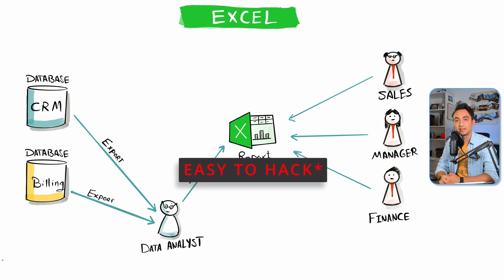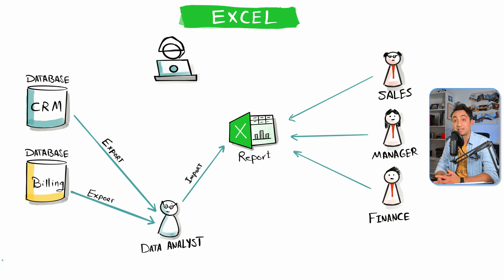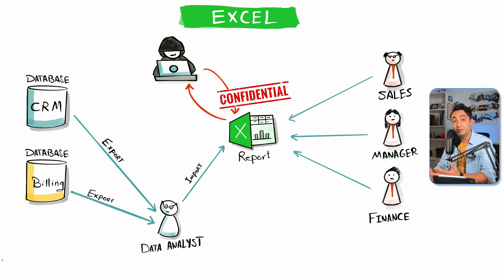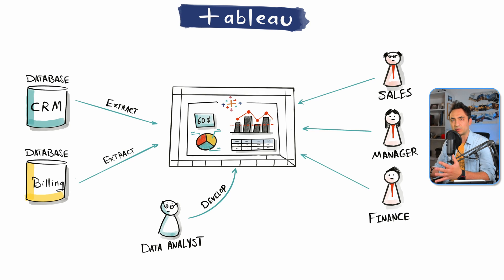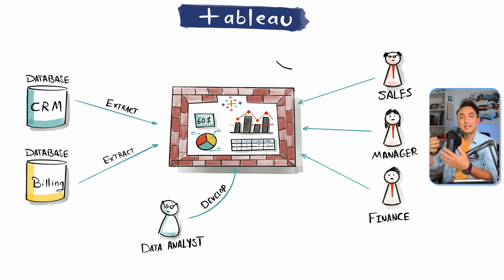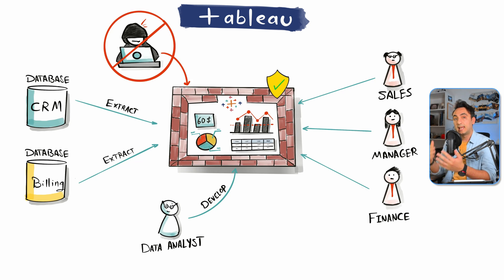Another benefit is security. With Excel, it's really hard to secure data — even password-protected spreadsheets can be hacked easily nowadays. Users are used to sharing Excel files via email, copying to USB, or storing locally on their computers, which is not secure at all. This could cost companies a lot if sensitive and confidential data is accessed by competitors. With a modern BI tool like Tableau, we get superior security features like advanced access control, data security, and network security. We don't export data — we simply share dashboards and reports, and only grant access to authorized employees.